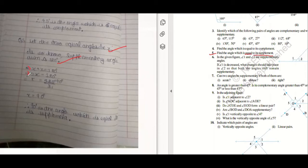Solving: x plus x equals 180 degrees, so 2x equals 180, therefore x equals 90.